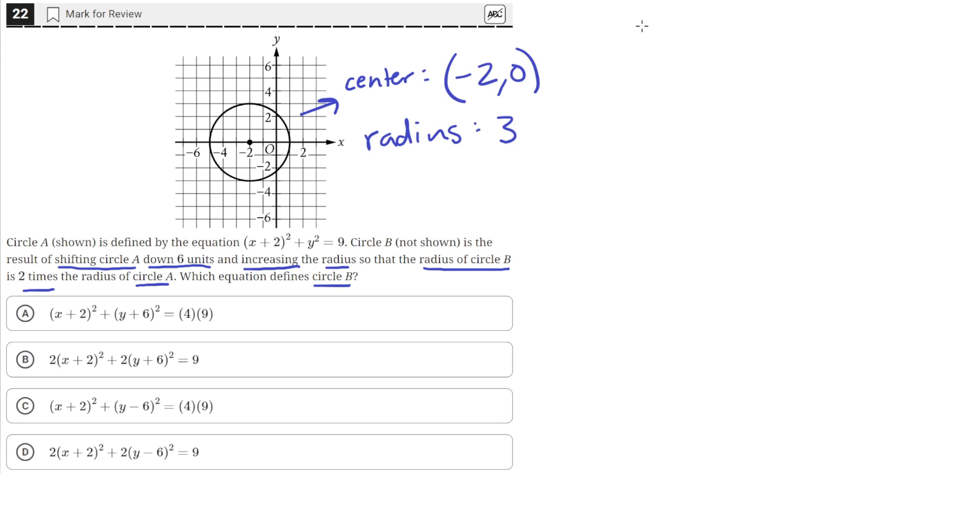What we want from circle B is that it should have a center which is shifted down 6 units. That's what they mean by the result of shifting circle A down 6 units. So the center of this new circle should be down 6 units, 1, 2, 3, 4, 5, 6. So it should be right here.